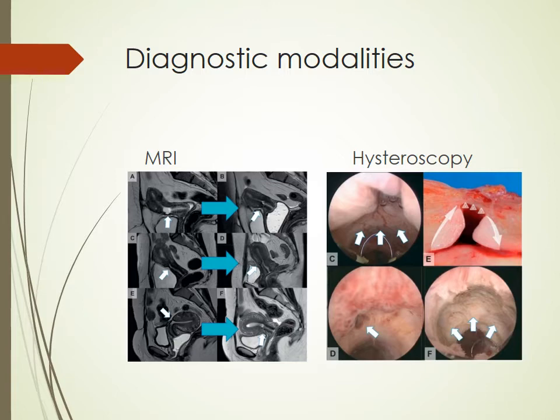Other diagnostic modalities include MRI, which is useful mainly for confirming residual myometrial thickness and identifying other pathologies such as adhesions — particularly helpful if planning a laparoscopic operation to get an overall picture of the pelvis. Hysteroscopy can also assist, allowing direct visualization of the defect on the anterior or lateral aspect of the cervix while navigating from the fundus towards the cervix. It is better performed during the follicular phase when residual blood collection within the pouch may be visible.